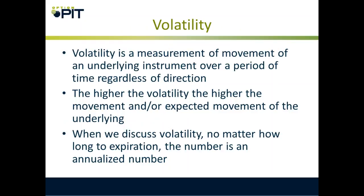Volatility is a measure of movement of an underlying instrument over a period of time, regardless of direction. Volatility and variance are very similar — the difference is variance is over a data set and volatility is over a time series. The higher the volatility, the higher the movement or expected movement of the underlying. No matter how long to expiration, the number is annualized. So if I'm looking at a contract that expires on Friday, that volatility is an annualized number — it's not what the volatility is expected to be between now and expiration, it's the annualized volatility over that option's lifespan.